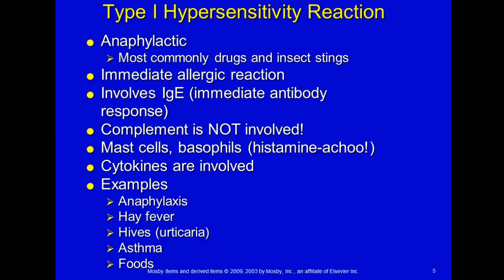In Type 1, complement is not involved and there's not much cell destruction, but the release of histamine and heparin from mast cells and basophils — along with cytokines — makes it significant. Examples include anaphylaxis from a bee sting, hay fever, hives (urticaria), asthma, and food allergies such as peanut allergy or an apple allergy that can cause throat swelling. These are usually not as life-threatening, though a bee sting can be.